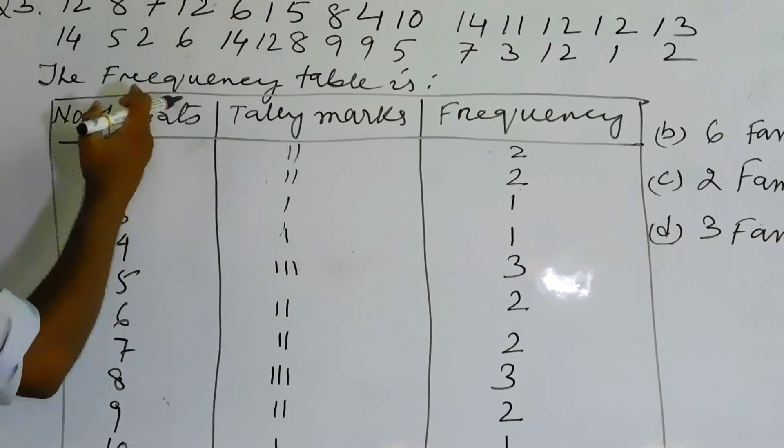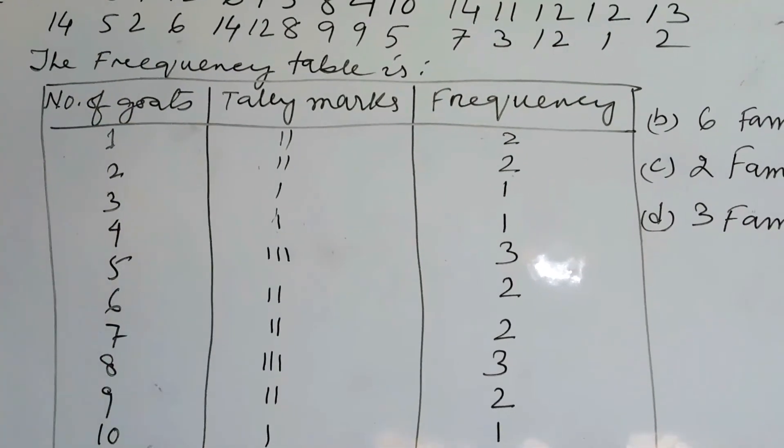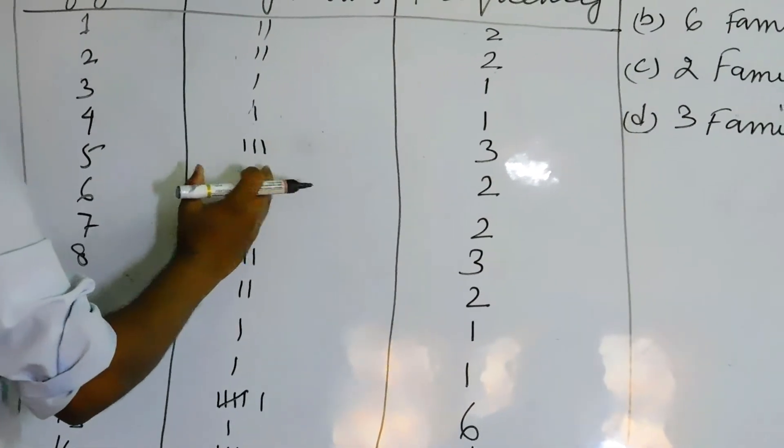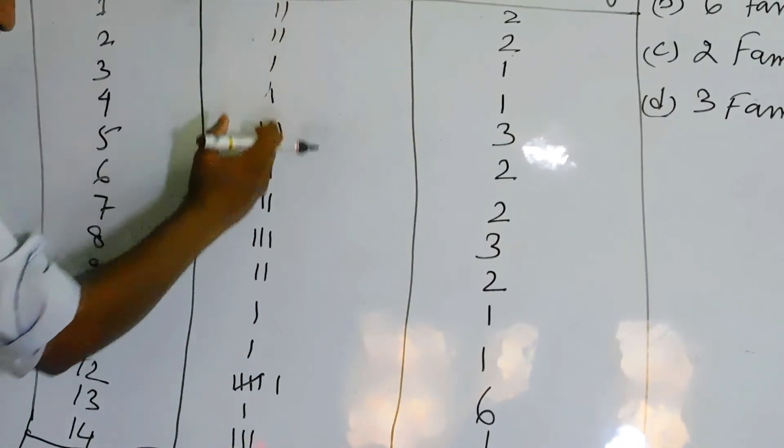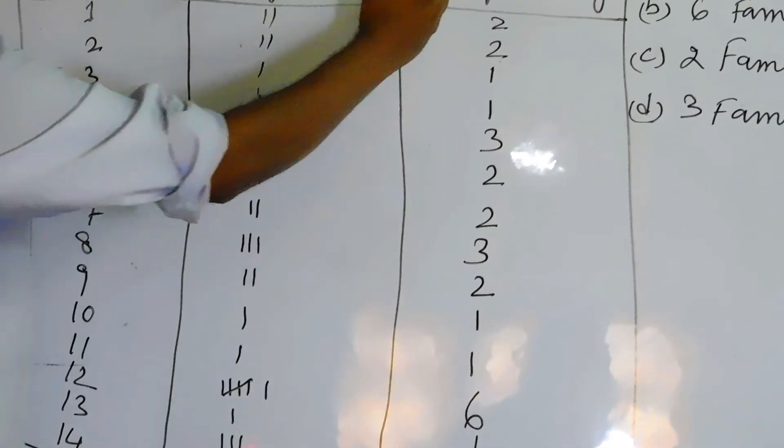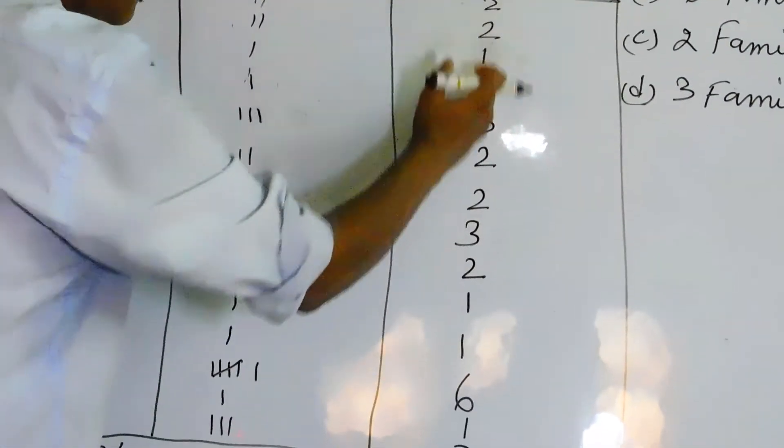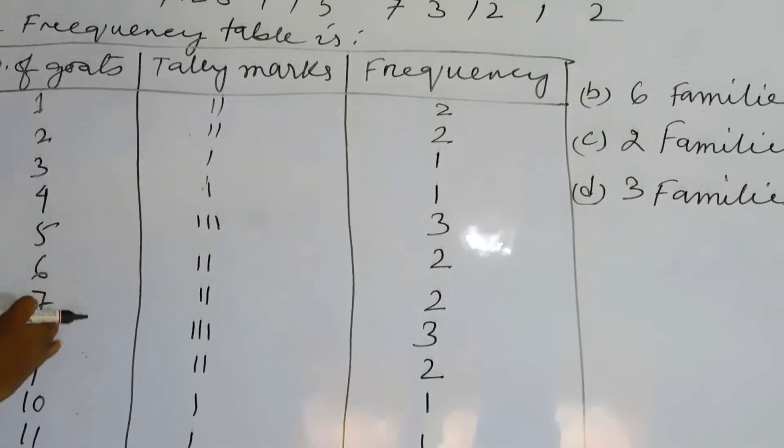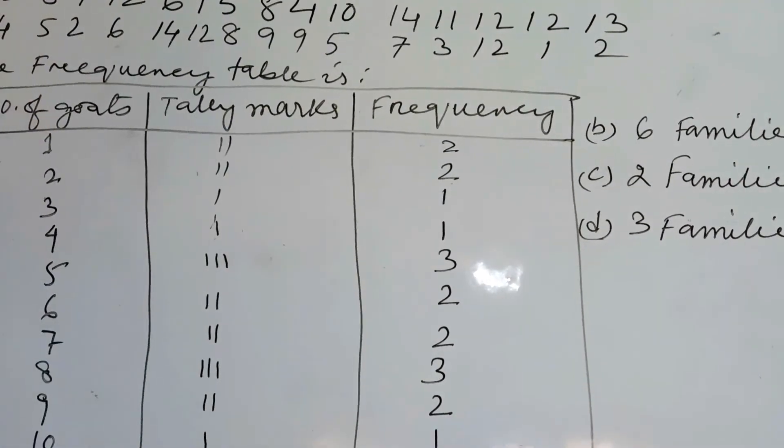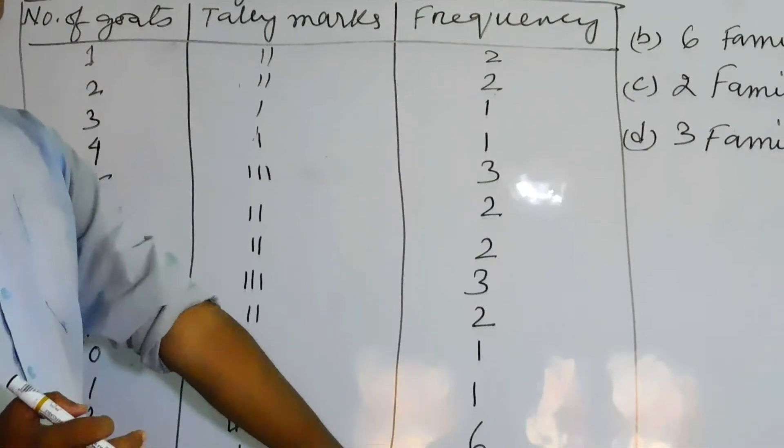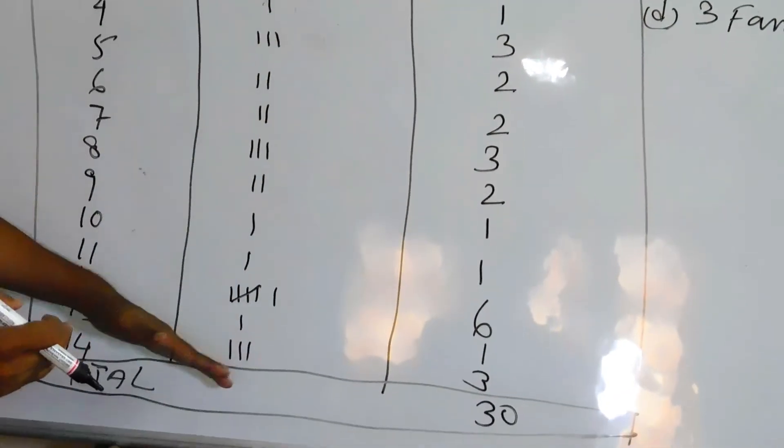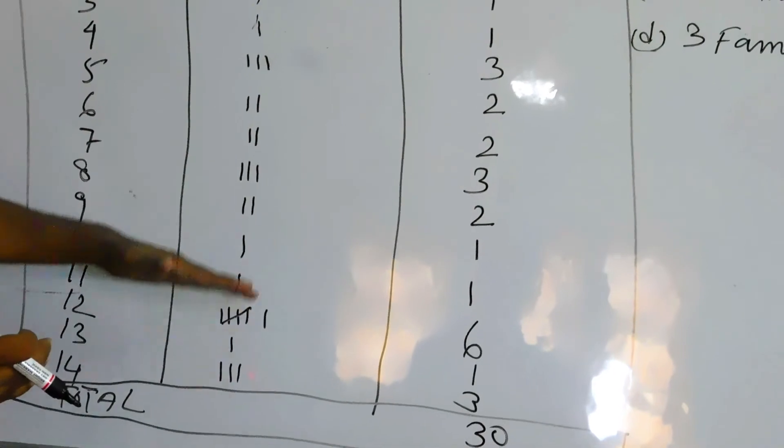So like that you will have to write. Data are one to fourteen, so that is number of goats, and then count how many tally marks or how many observations are there, note this down here. And then frequency table, in the frequency table you will have to write the total number of families rearing the number of goats is given here. And when you total it the total should come 30 because here 30 families. Then this way you can prepare the frequency table.